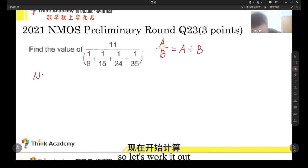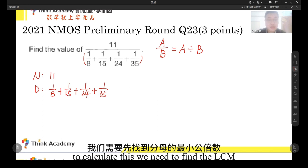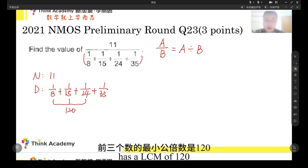So let's work it out. The numerator is 11. The denominator, however, we need to calculate: one eighth, one fifteenth, one twenty fourth, and one thirty fifth. To calculate this, we need to find the LCM of its denominators.